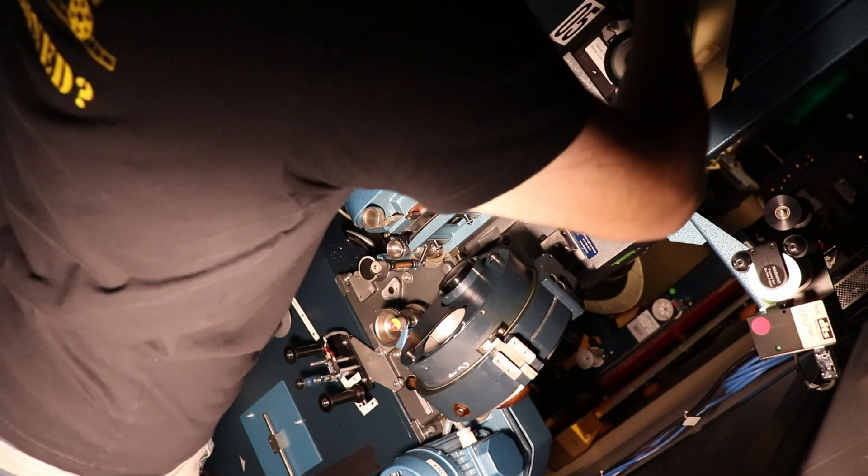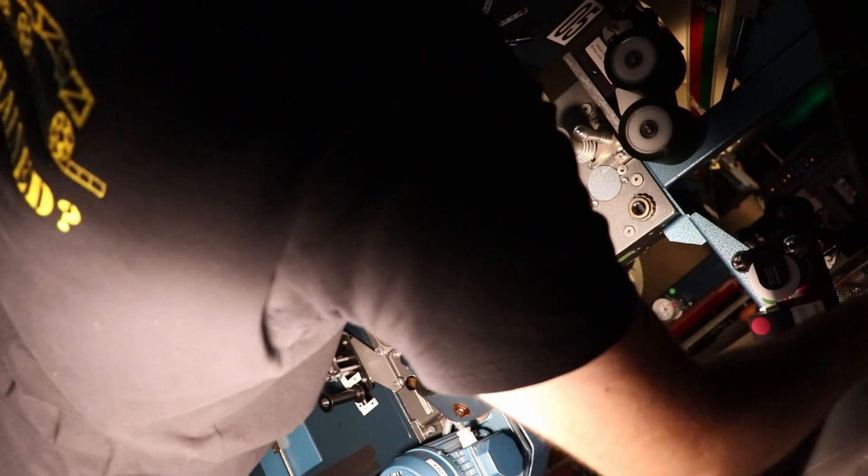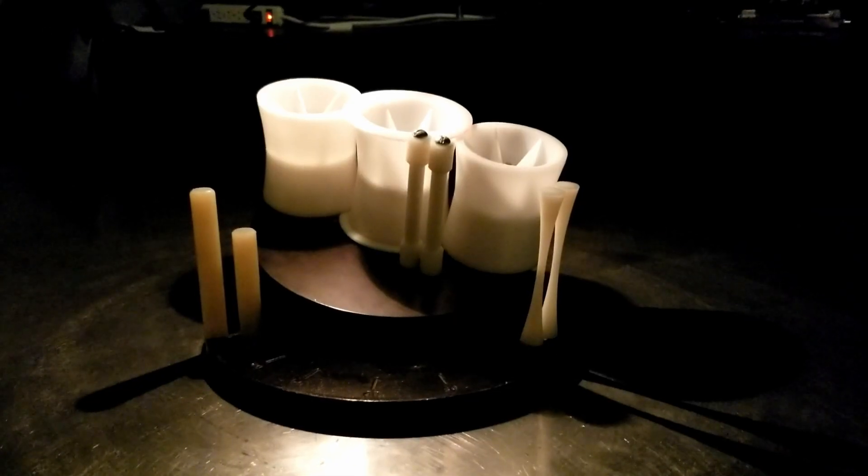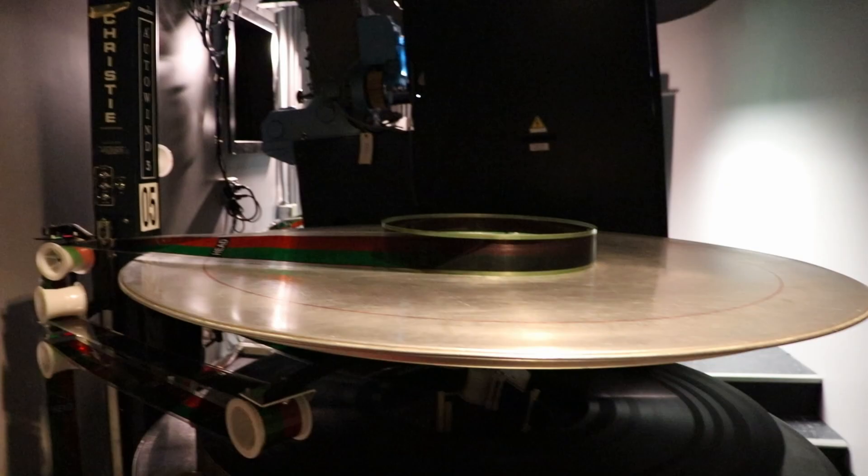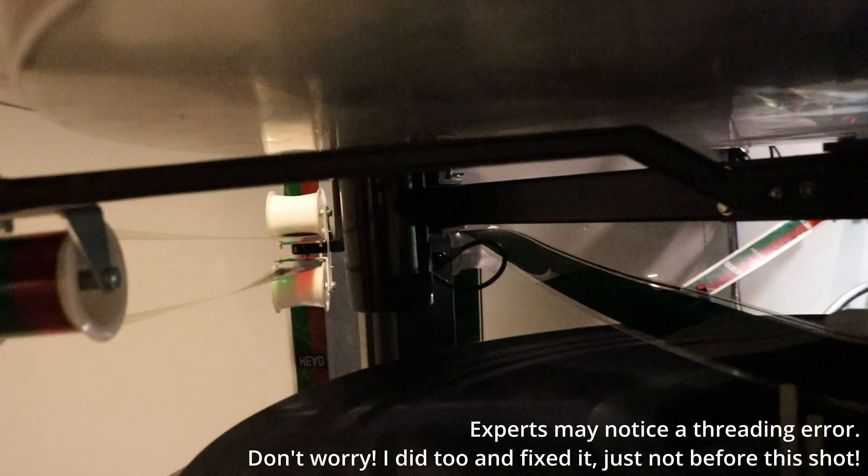Now that everything's clean again, we can start threading. This varies a lot based on physical placement of things and the projector model, but the basic idea is the same. Put the payout head on the platter deck with the film, take out the center ring, and put the ring on the deck you want to be your take-up. Thread the film through the payout head, platter tree rollers, wall rollers if applicable, and then back to the take-up platter.